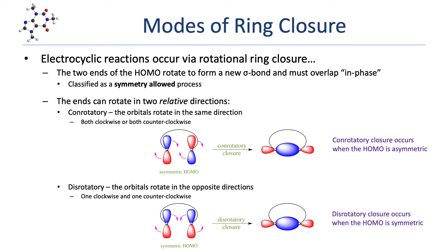In a disrotatory ring closure, the two ends rotate in opposite directions — one clockwise and the other counterclockwise. Disrotatory ring closure occurs when the HOMO is symmetric. Here we see a simplified depiction of a symmetric HOMO reacting with disrotatory ring closure. Each orbital rotates 90 degrees, but now in opposite directions, again bringing the blue orbital lobes together to give an in-phase overlap.